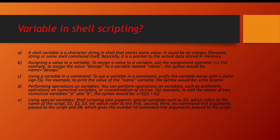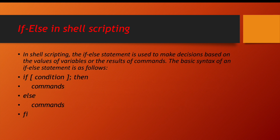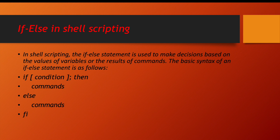Now let us understand if-else in shell scripting at a high level. The syntax is: 'if' then in square brackets we write the condition, followed by a semicolon, then the 'then' keyword. After that, you write all the commands for the if block. Then the 'else' block with its commands. To close the if loop, the opposite of 'if' is 'fi', so we close the if-else condition with a 'fi' statement.